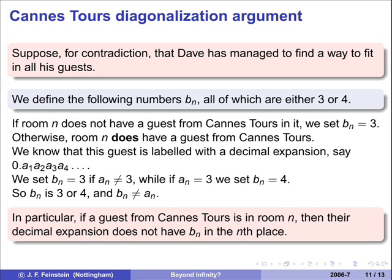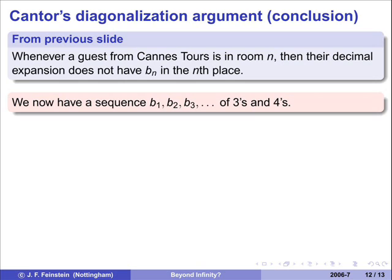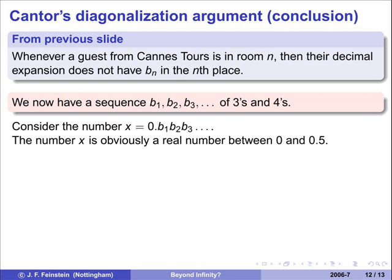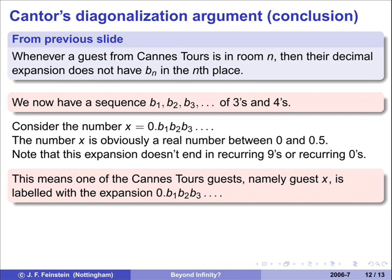So we'll put that in a box: if there's a guest from Cantor's in room n, then their decimal expansion doesn't have bn in the nth place. We now continue with Cantor's diagonalisation argument. Whenever there's a guest from Cantor's in room n, their decimal expansion doesn't have bn in the nth place. But we've got a sequence of threes and fours as defined above, and we can use it to make a new real number, which we call x = 0.b1b2b3. It's made up of threes and fours, so it's definitely between 0 and 0.5. It's a real number between 0 and 0.5, so it's the same as one of the numbers belonging to one of the Cantor's guests. And it doesn't end in recurring nines or recurring zeros, so it's even the same expansion that one of the Cantor's guests has. We'll call them guest x, since they've got an expansion corresponding to that number x.